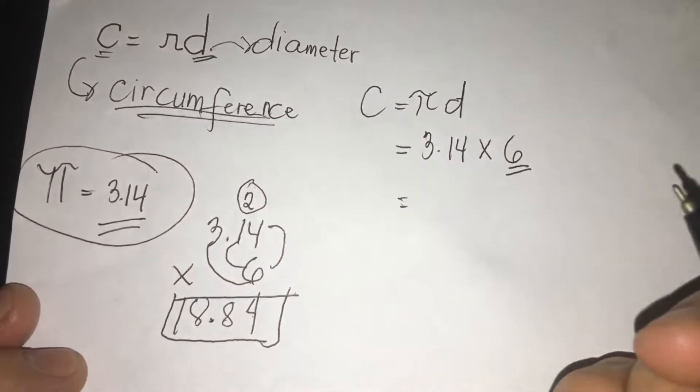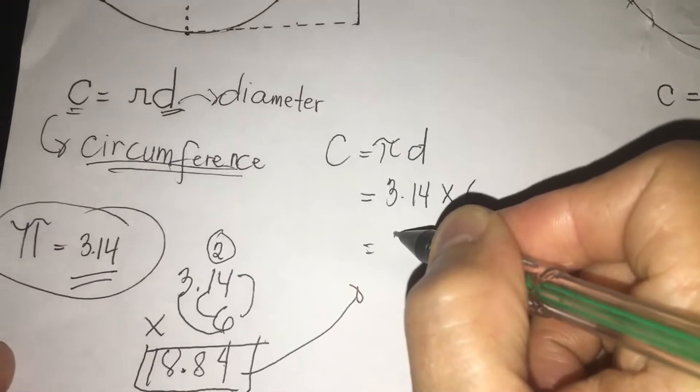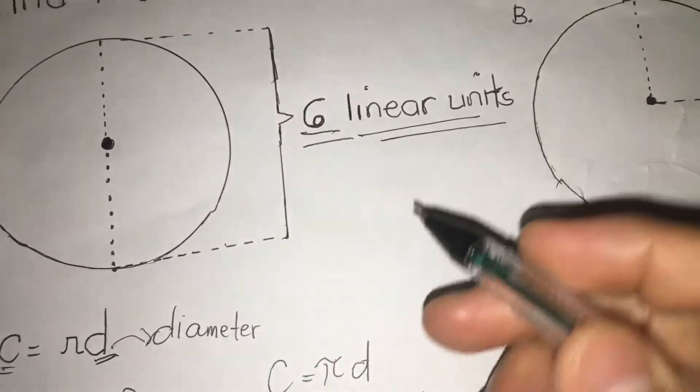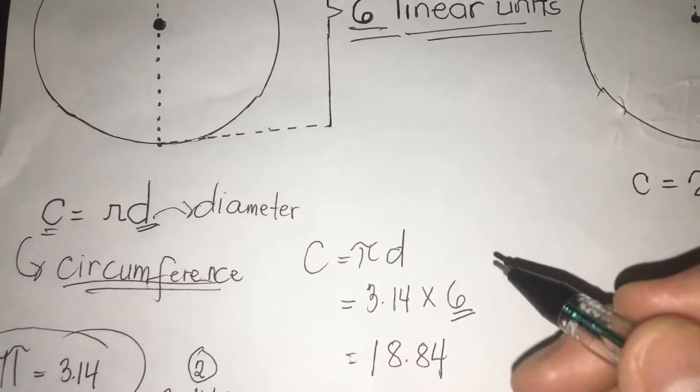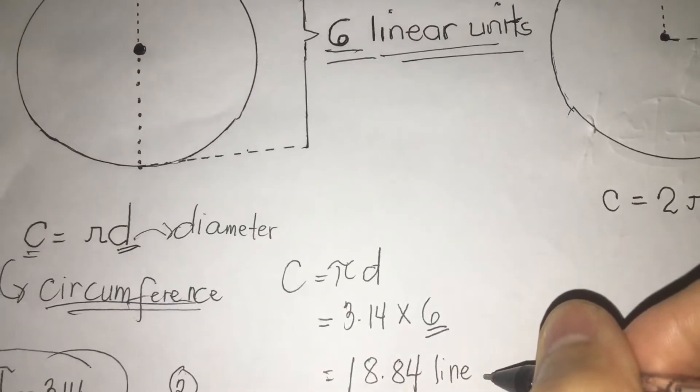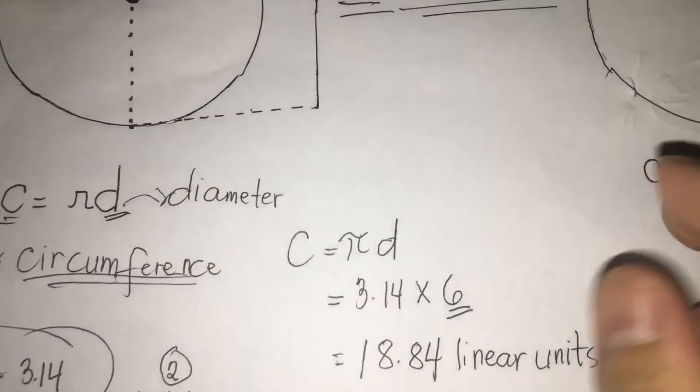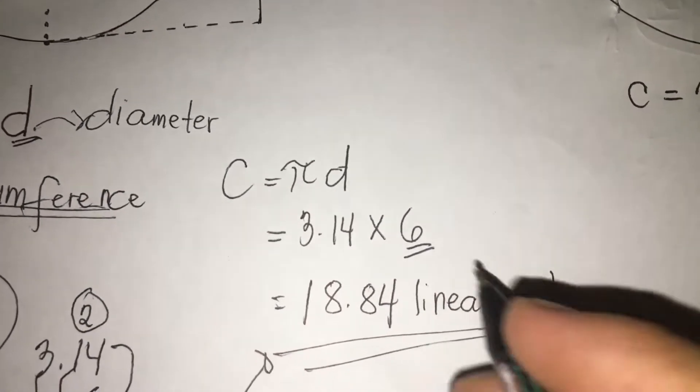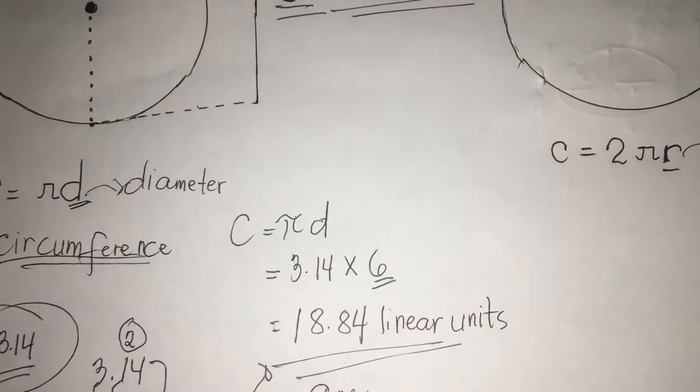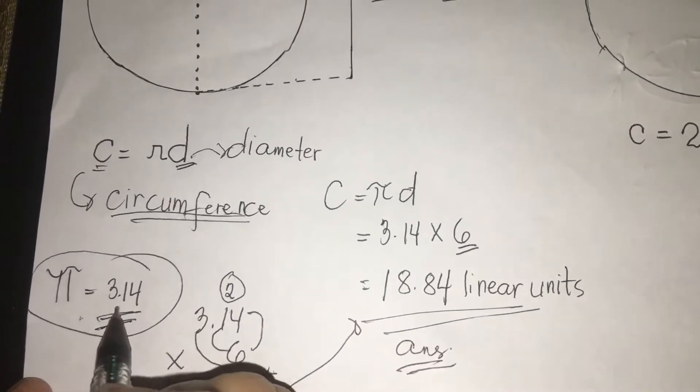So remember class or students, when you write 18.84, you're going to transfer 18.84. Don't forget to write the word linear units to make your answer complete. I'm going to write 18.84 linear units. This will be our answer. Simple, right? So we need to know the value of pi, which is 3.14.